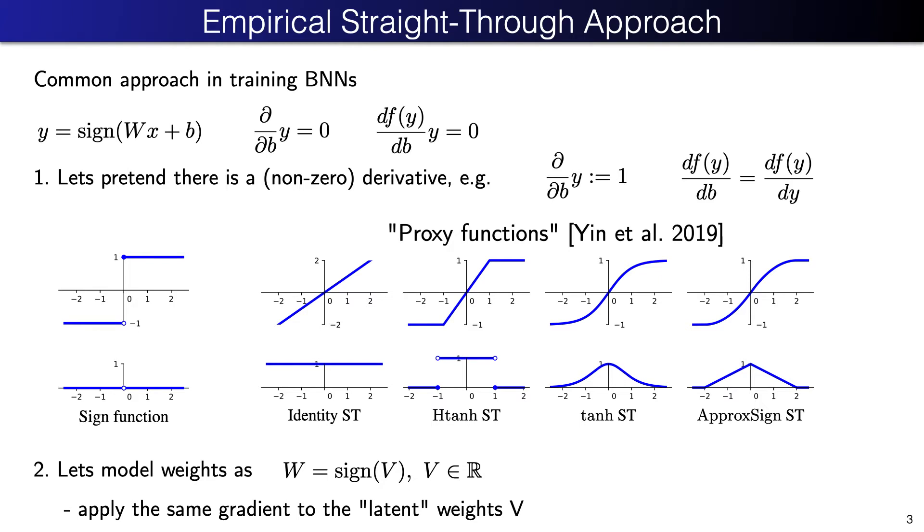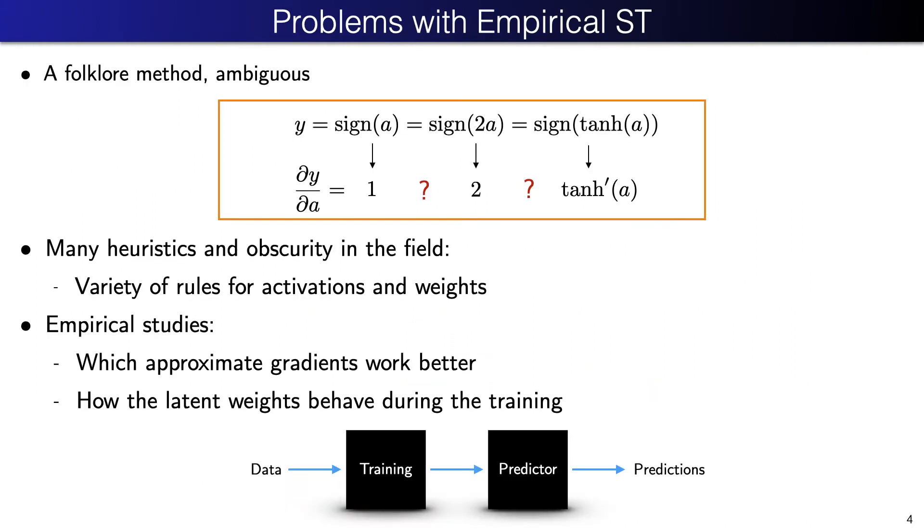The same method can be applied to weights noting that we can represent a binary weight as a sine of some latent real-valued weight. This approach is indeed a folklore method, which is not formalizable. The same function sine of a can be equally written in different ways. Should we then propagate straight-through it in the first form, obtaining derivative of 1, in the second form, obtaining derivative of 2, or in the third form, obtaining derivative of the hyperbolic tangent? Which one is correct? There is no answer.